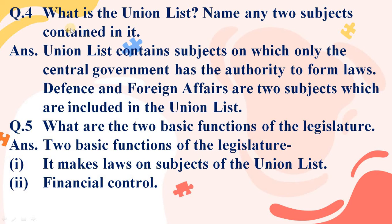What is the Union List? Union List kya hai? Name two subjects contained in it. Union List mein wo subjects hain on which only the central government has the authority — adhikar hai — to form laws. Defense (raksha) and foreign affairs are two subjects of the Union List.